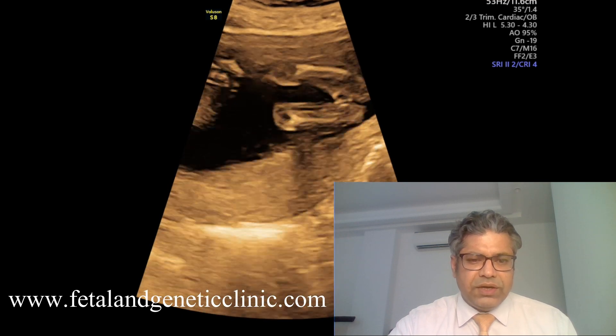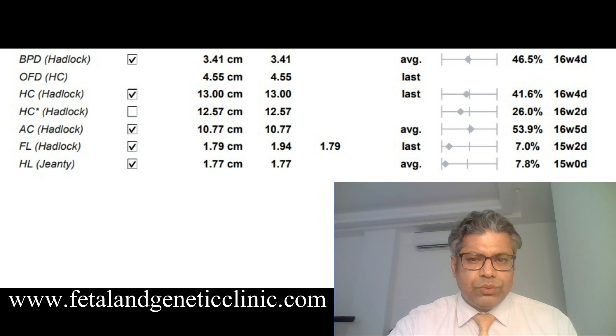Then we did the biometry. In biometry, we have about 16 weeks and 3 days, which is about 1 to 1.5 weeks behind. As I told you, in Down syndrome — the commonest aneuploidy — there is characteristically mild short long bones on antenatal ultrasound.